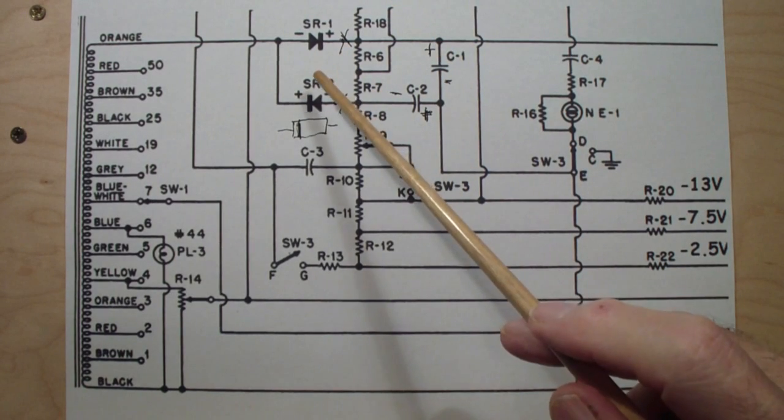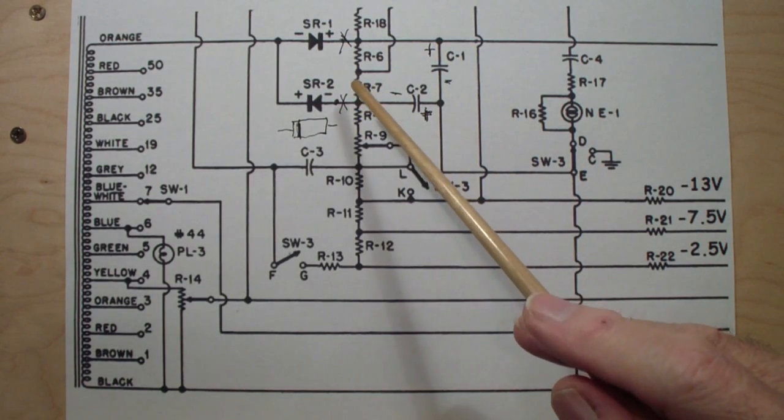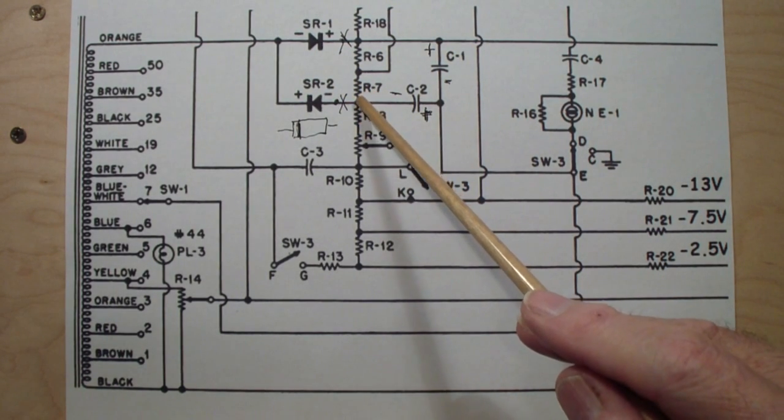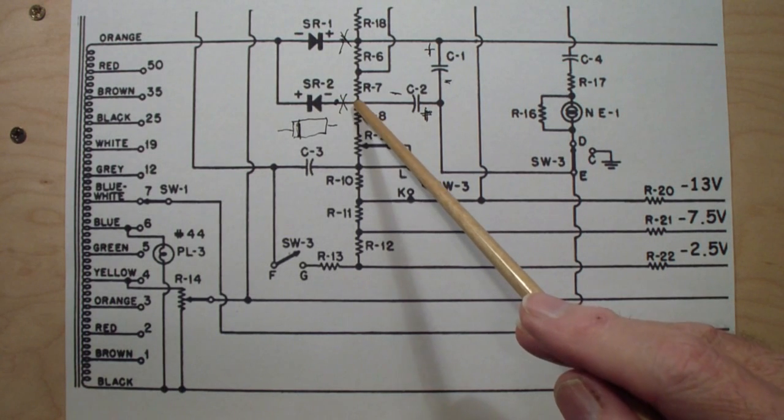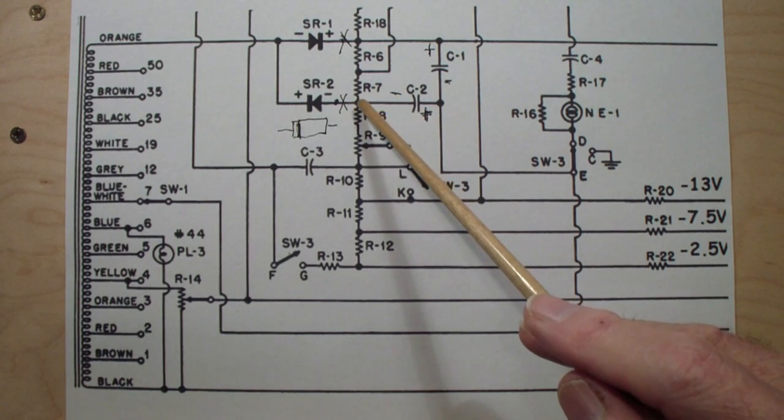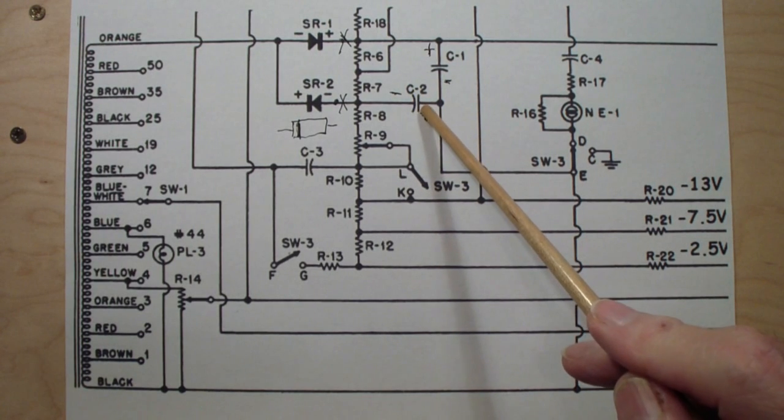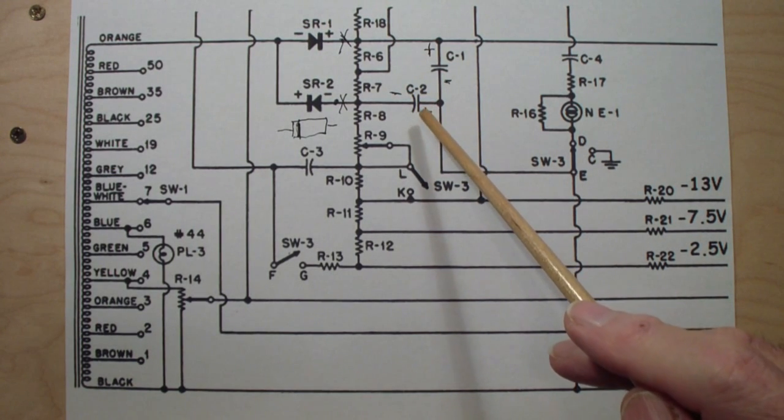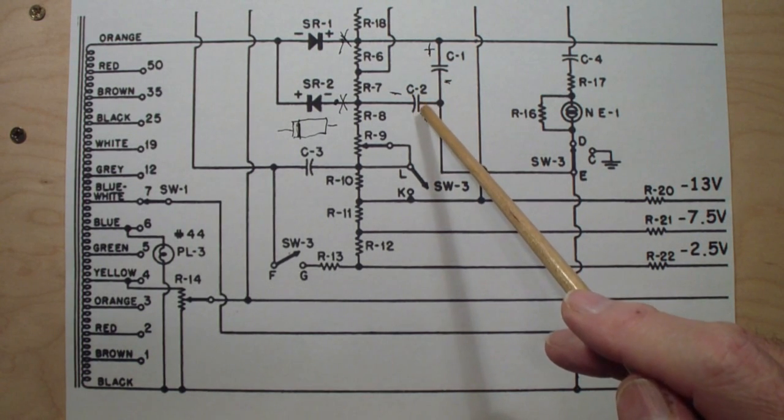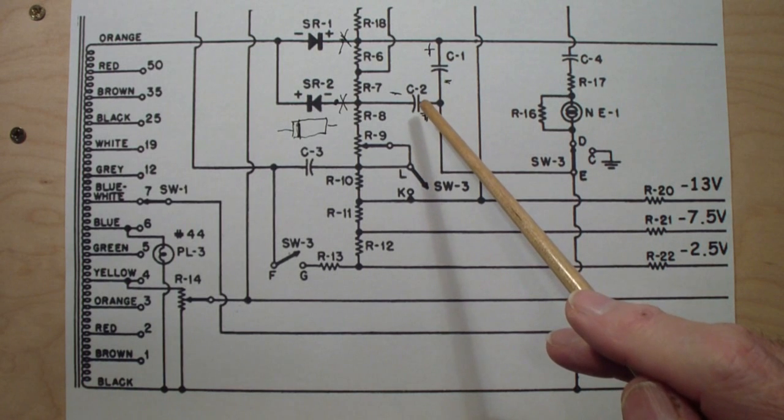The specific problem is, as I understand it, that the viewer is only getting negative five volts on this capacitor. I assume that this is the one they're talking about. They also mentioned that they are using capacitors that are five times the originals. That's not a good idea.